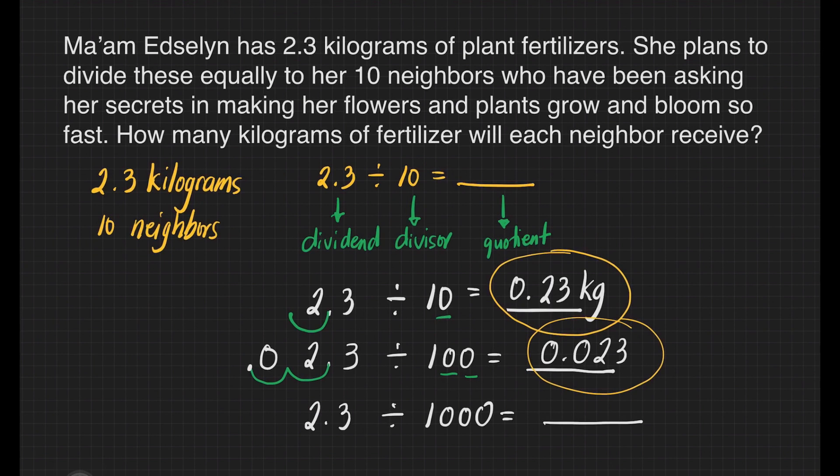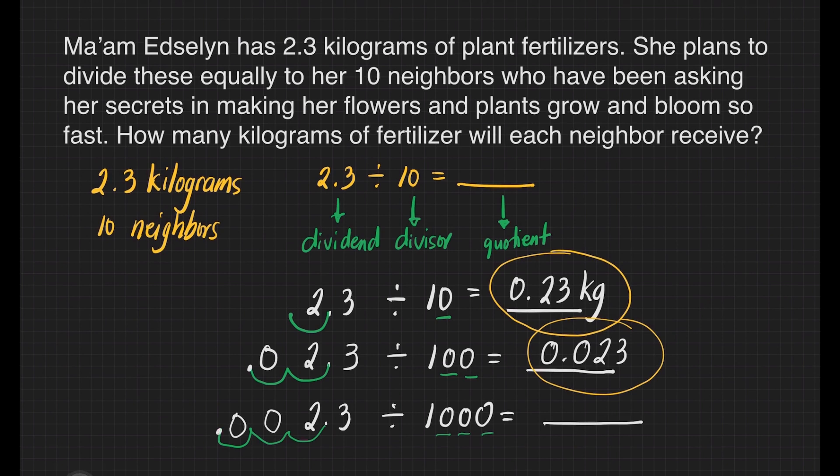What if our question is 2.3 divided by 1,000? We have three zeros in our divisor. That's 1, 2, 3. That means we will move three decimal places to the left of our dividend. That's 1, 2, and 3. The empty spaces will be zeros. And our decimal point will be here. Our answer is 0.0023. Our final answer is 23 ten-thousandths. And that's it.